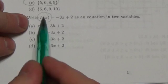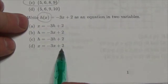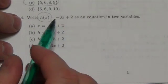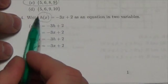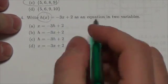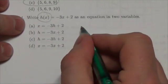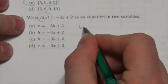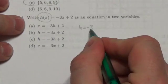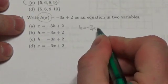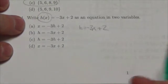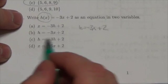Now notice there's no y's down here. So it would appear that what they're doing is they're just going to replace this with h. So instead of y, we're going to write h equals negative 3x plus 2. So here's the function written with two variables.